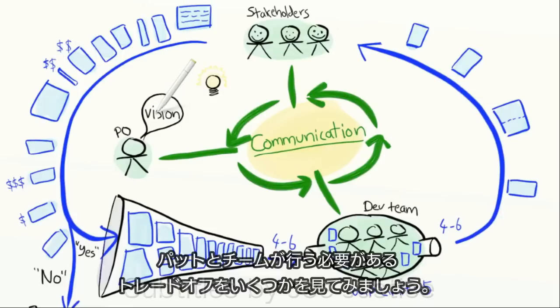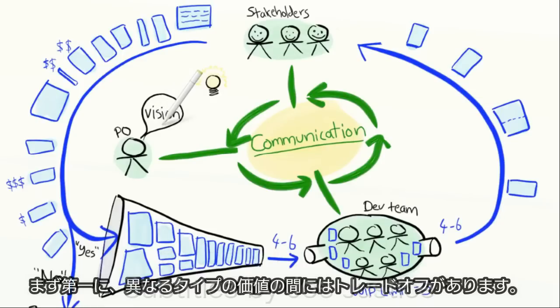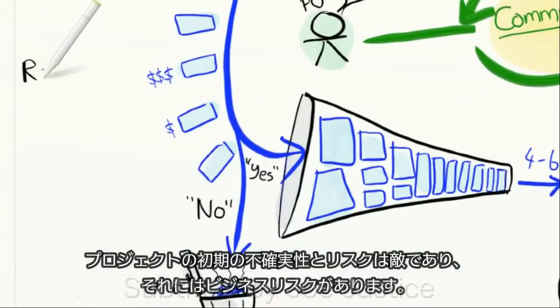Let's take a look at a few of the trade-offs that need to be made by Pat and the team. First of all, there's a trade-off between different types of value. Early on in a project, uncertainty and risk is our enemy.